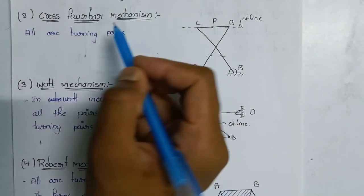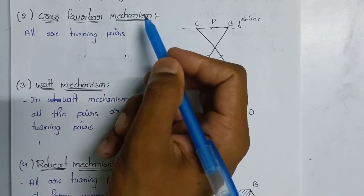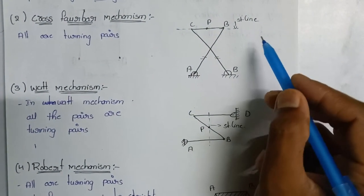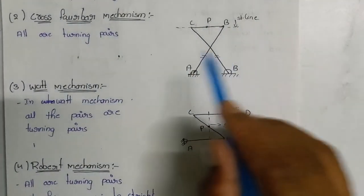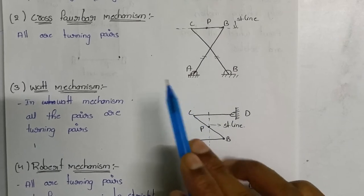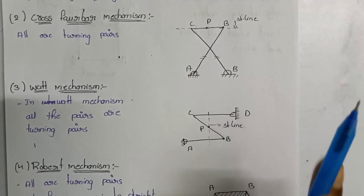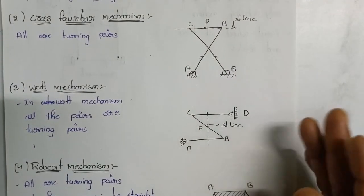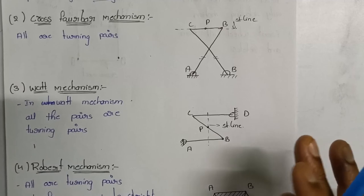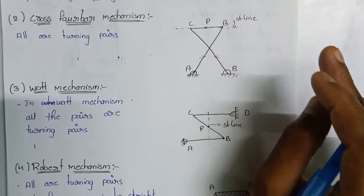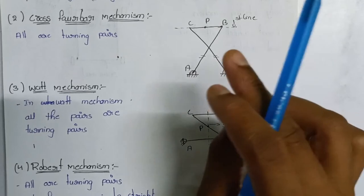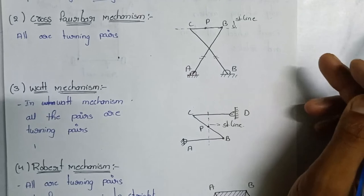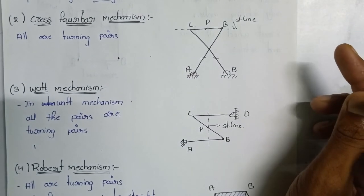Grass 4-bar mechanism — approximate straight line. The same mechanism: as the approximate limit, the sliding pair is replaced. The second point is to replace the turning pair. The third point is to replace the exact limit and approximate limit. The length is the same type of variation.